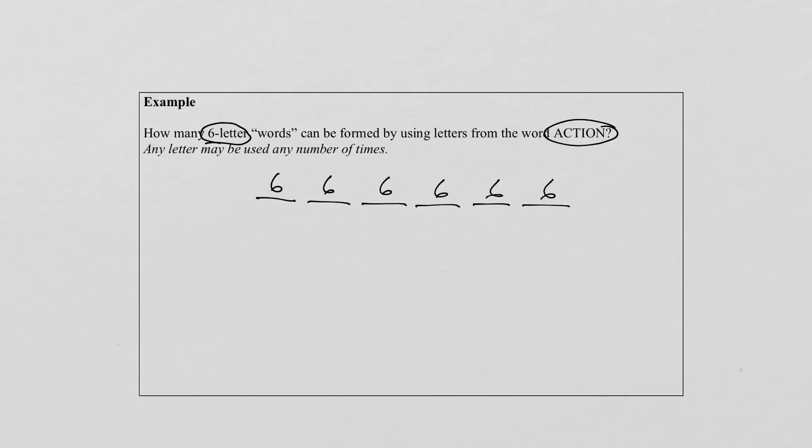Now the counting principle says once we know how many ways we can do every position, we multiply to find the total number of six letter words, which will give us six to the exponent of six. Again, use your calculator because it's quite a big answer.